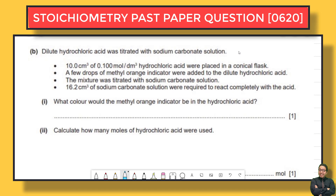Diluted hydrochloric acid was titrated with sodium carbonate solution. We have 10 cm³ of 0.1 mol/dm³ hydrochloric acid. So V = 10 cm³ and concentration of HCl = 0.1 mol/dm³. Note that the volume is in cm³, so in any calculation we need to convert cm³ into dm³.